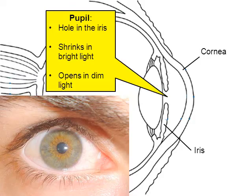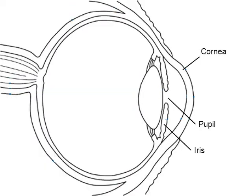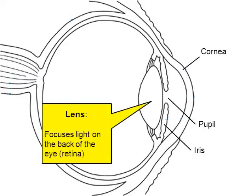Moving on to the next part of the eye. The next part is just behind the iris — it's called the lens. As light enters the eye, the purpose of the lens is to focus light onto the back of your eye, which is called the retina.